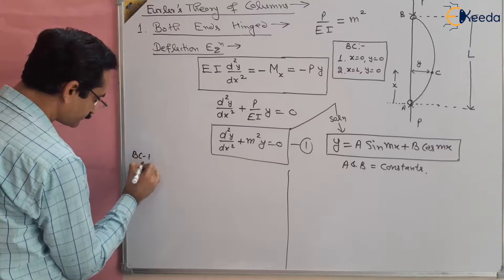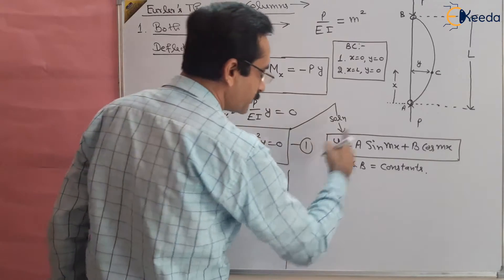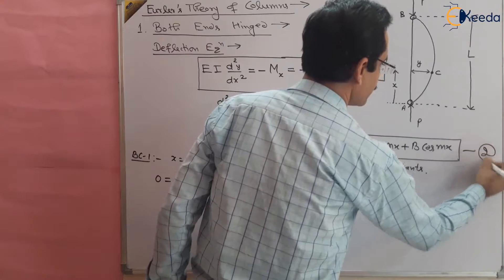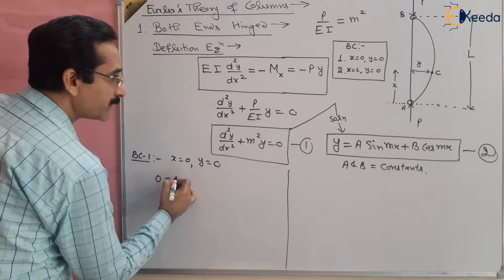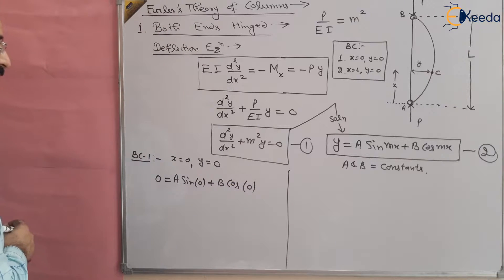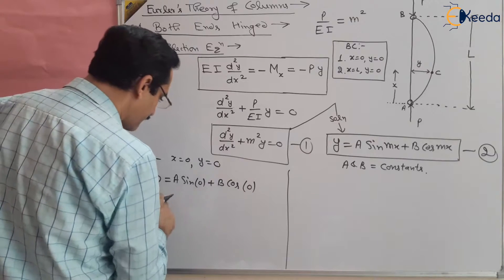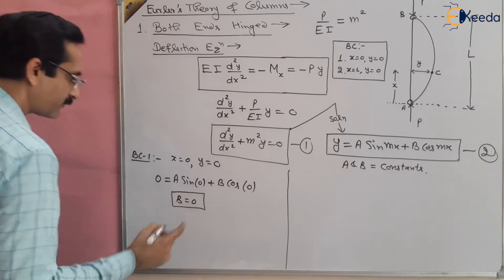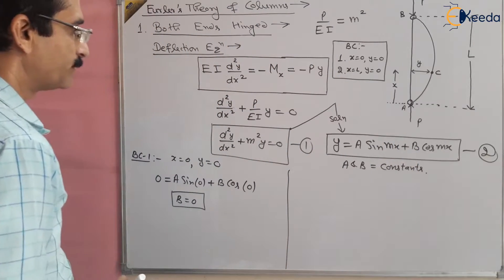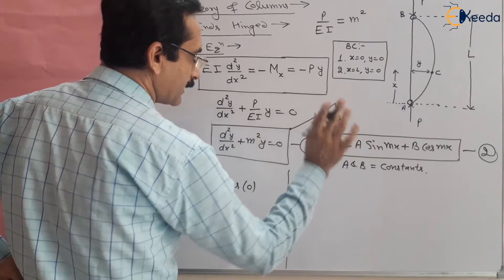Applying the first boundary condition: at x = 0, y = 0. Substituting into the equation: 0 = A·sin(0) + B·cos(0). Since sin(0) = 0 and cos(0) = 1, we get B = 0. So from here we have found one unknown: B = 0. The equation now becomes: y = A·sin(mx).